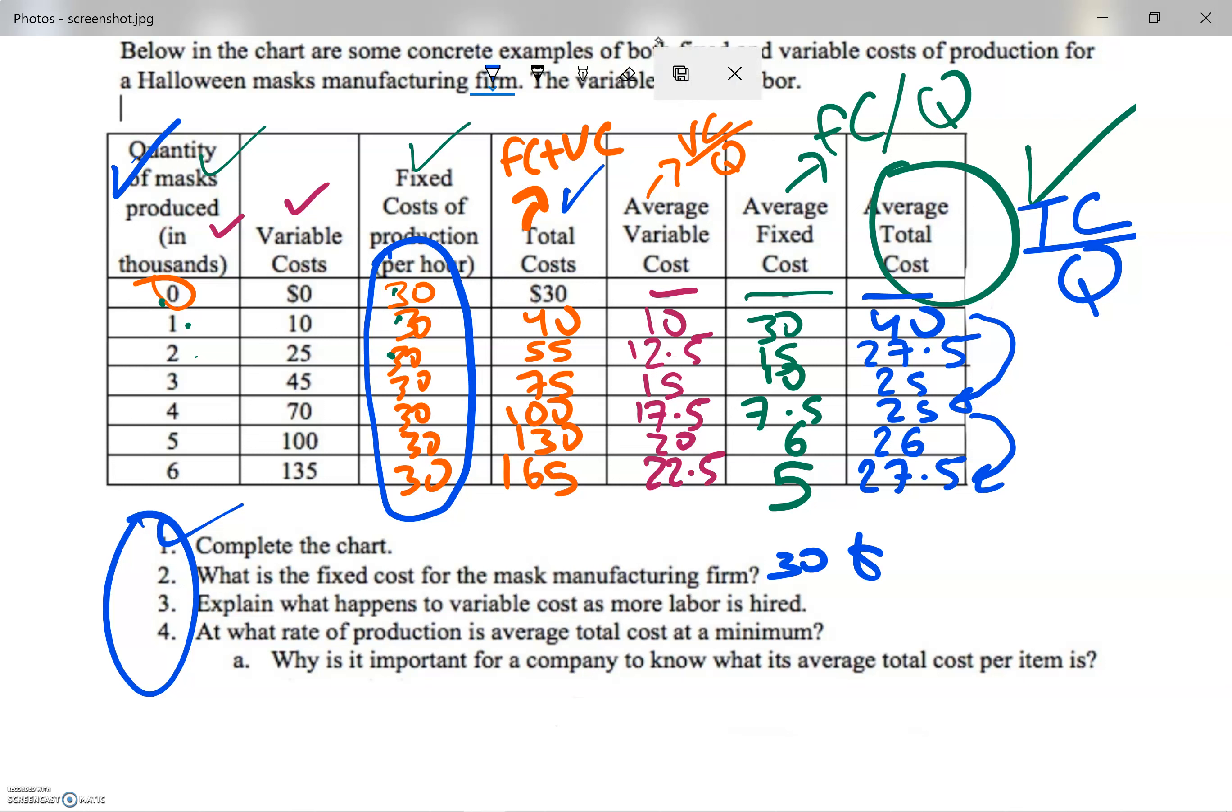Explain what happens to variable cost as more labor is hired. If I'm paying them a wage, I need to pay for them per hour. So definitely, the more labor I hire, the more my variable cost would be.